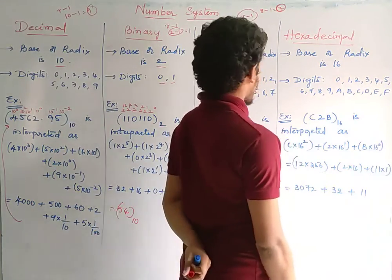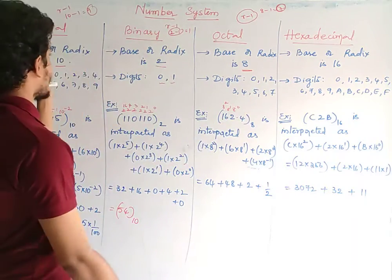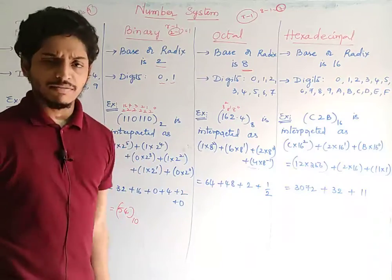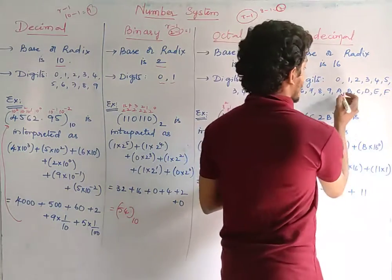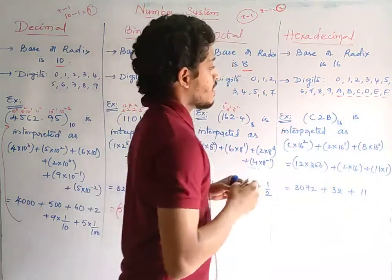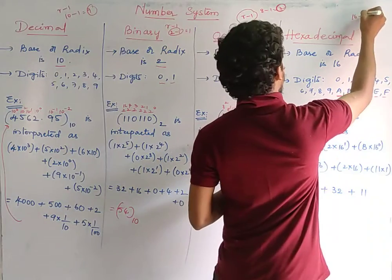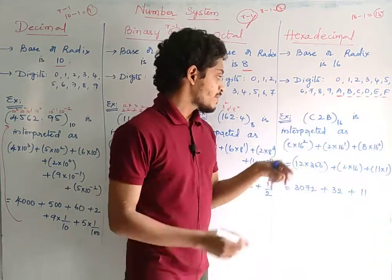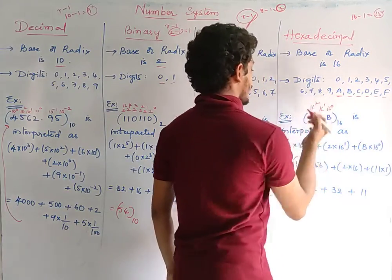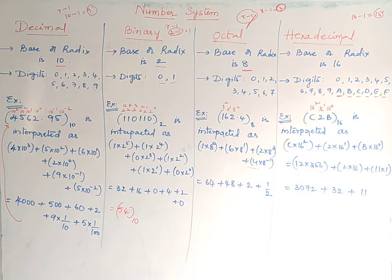For hexadecimal, the base or radix is 16. The digits are 0 through 9, then A, B, C, D, E, F — where A represents 10, B is 11, C is 12, D is 13, E is 14, and F is 15. The highest digit is 16 − 1 = 15. For a hexadecimal number like CB to base 16, we use 16 power 0, 16 power 1, 16 power 2 as place values to find the decimal value. You can also learn the conversions: decimal to binary, decimal to octal, decimal to hexadecimal, binary to decimal, binary to octal, binary to hexadecimal.